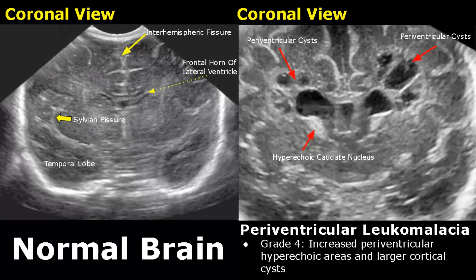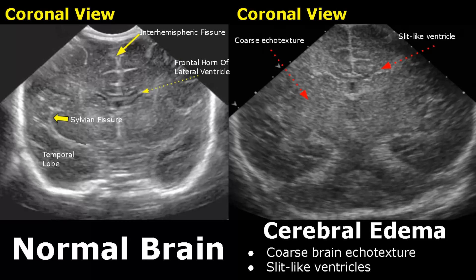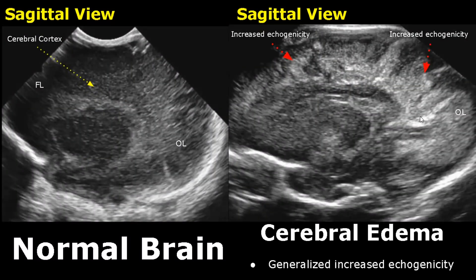Appearances of cerebral edema include coarse brain echo texture — rough areas that are slightly hyperechoic are seen, and the ventricles are difficult to visualize with a slit-like appearance. This sagittal view of cerebral edema shows overall increased echogenicity of the brain with many bright areas.